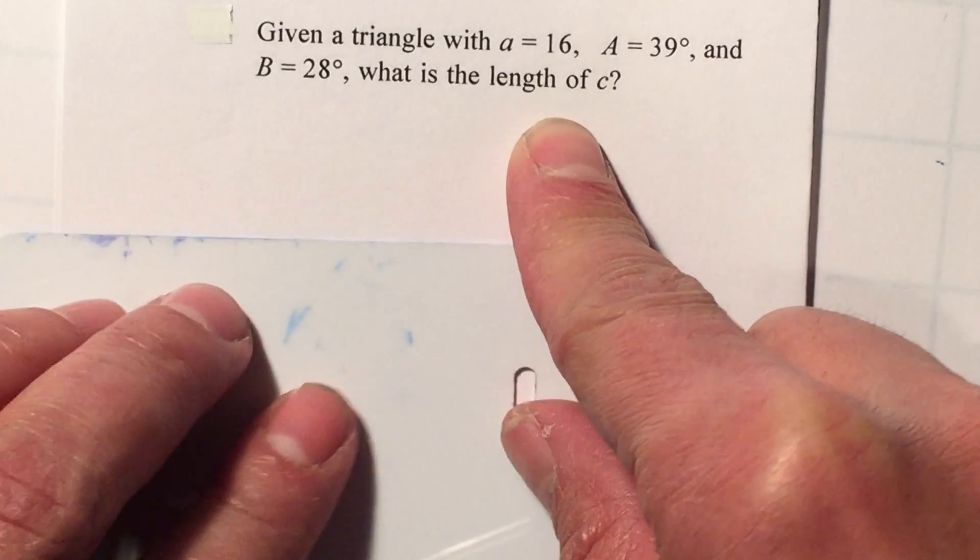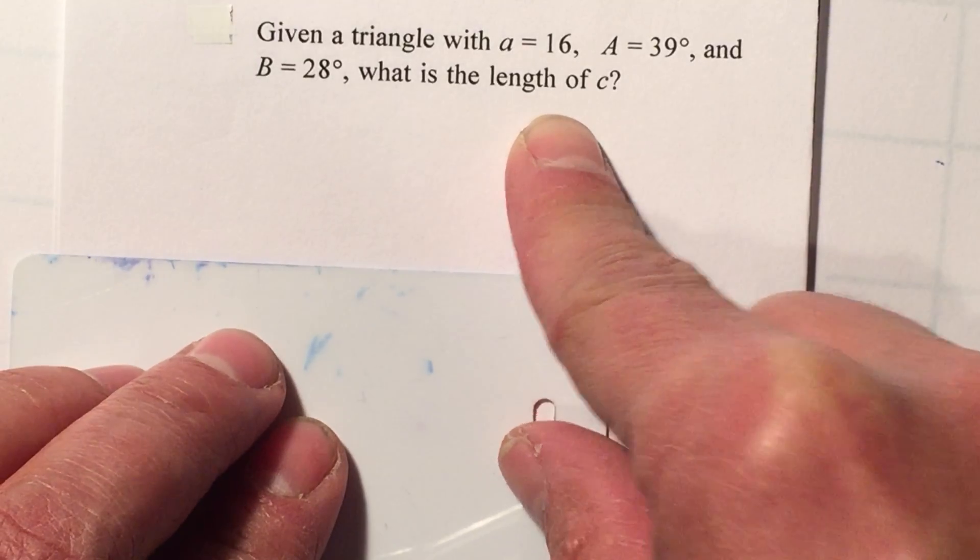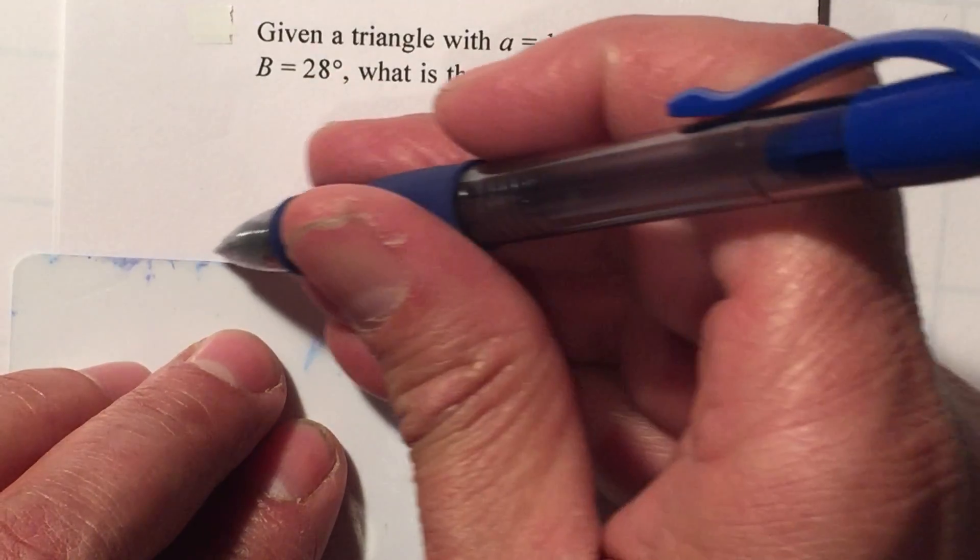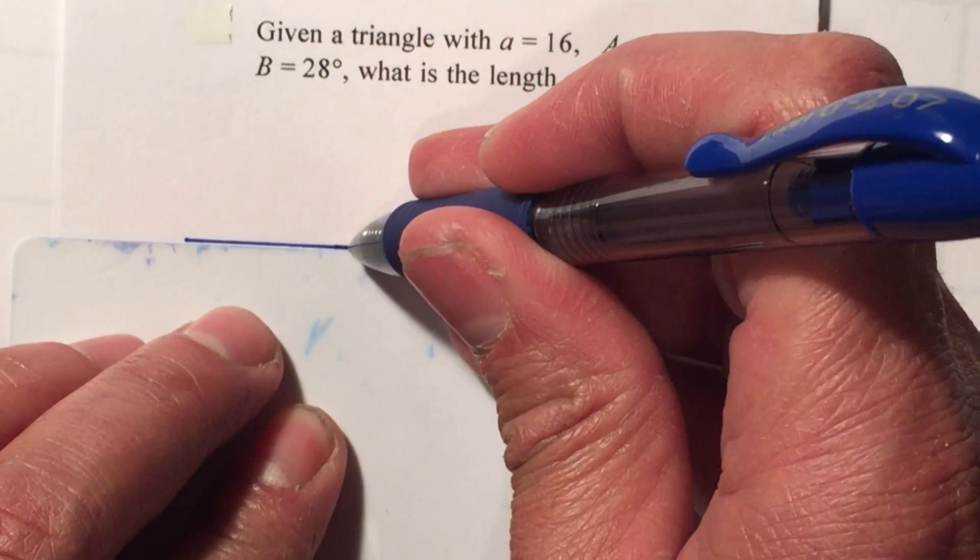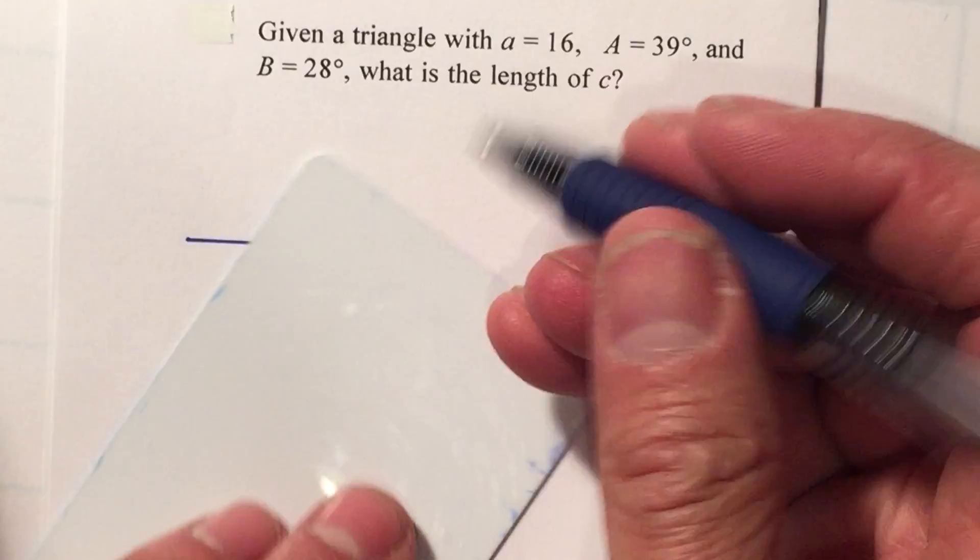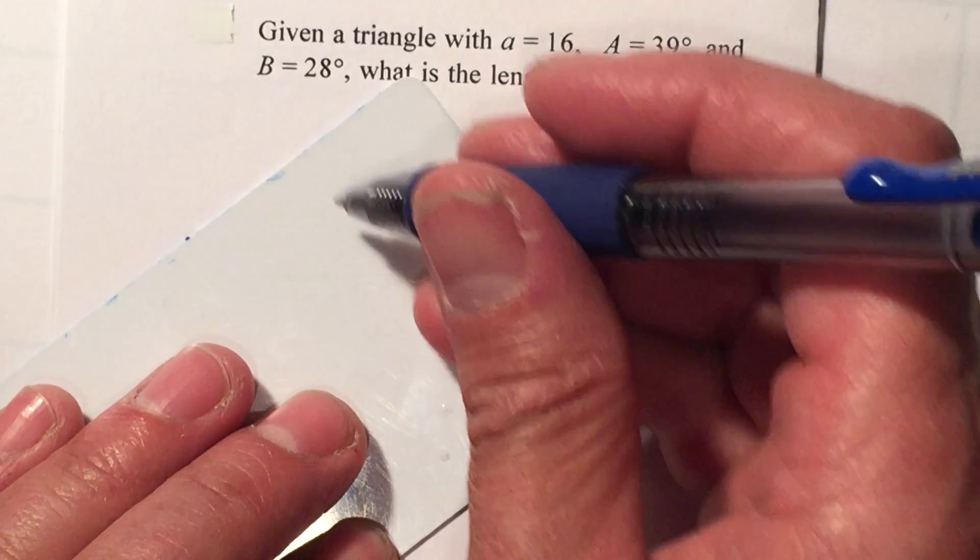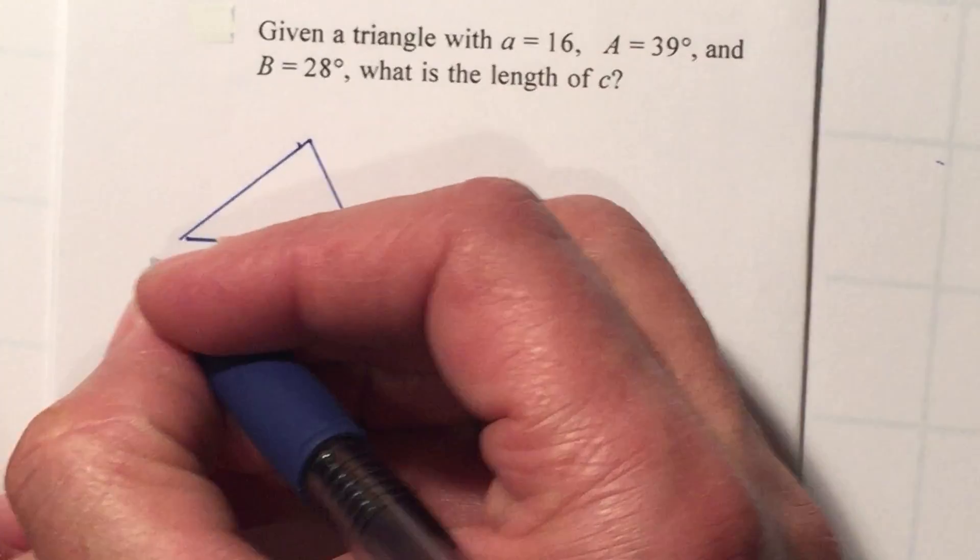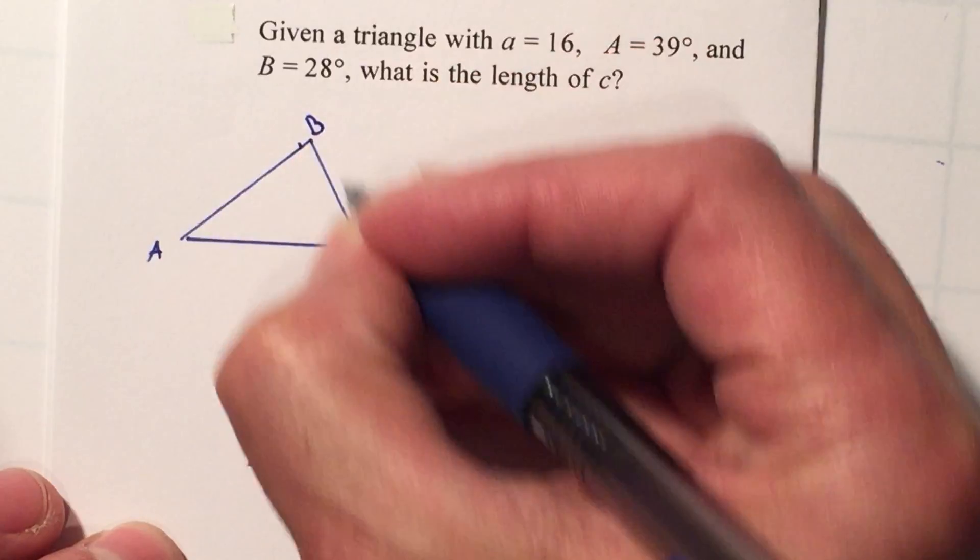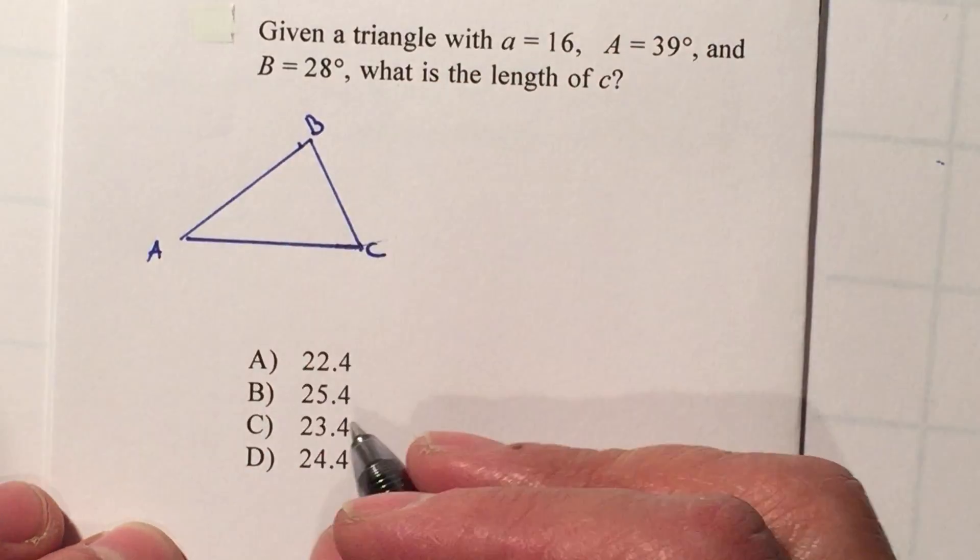I'm going to draw a generic triangle and I know my degrees might not be accurate, which is fine. Right now I just need to get an idea of what I'm looking for. It's not a right triangle because it doesn't specify that. I'm going to say this is A, this is B, and this is C. Remember it's not to scale.